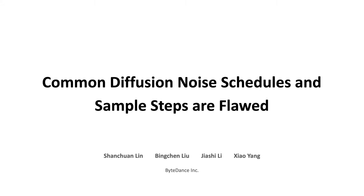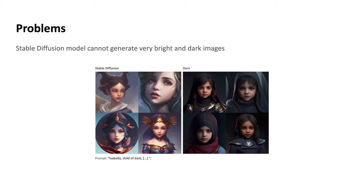Common diffusion noise schedules and sample steps are flawed. We found that many popular diffusion models, including stable diffusion models, cannot generate very bright and dark images. In this example, the prompt is 'Isabella, Child of Dark,' yet stable diffusion models tend to generate images with a mean brightness around 0.5 and plain contrast, whereas our fix allows the model to break these barriers and generate much brighter or darker and more cinematic images, more according to the data distribution.